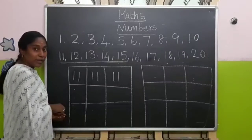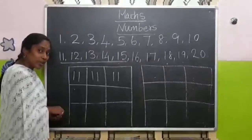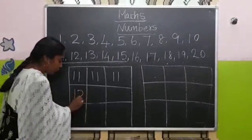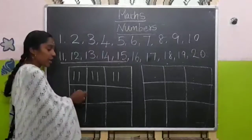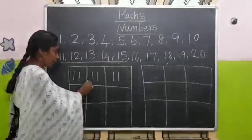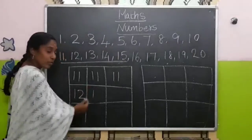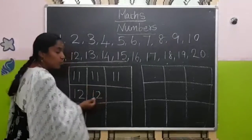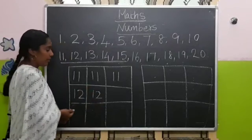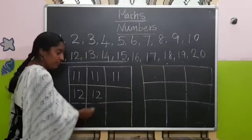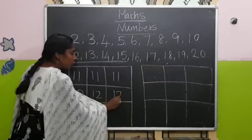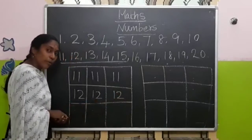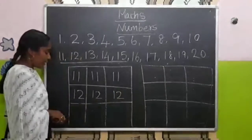To write number 12, you have to put 1 and 2. It makes number 12. One more time: 1 and 2 makes number 12. Very good children.